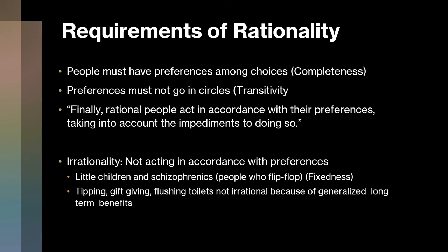Getting on to the requirements of rationality: what Bruce sees as the requirements come very close to the standard things we get when talking about preferences. He says people must have preferences among choices — this is the technical concept of completeness. Their preferences must not go in circles — this is the concept of transitivity. He talks about it exactly the way I like to: if you prefer strawberry to chocolate and chocolate to vanilla ice cream, then you should prefer strawberry to vanilla. There must be an internal consistency to preferences.